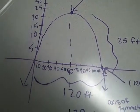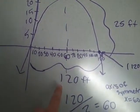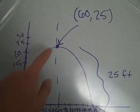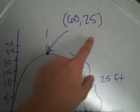So first we found the vertex, which would be half of 120, which is 60, and the height is 25, so that's our vertex.